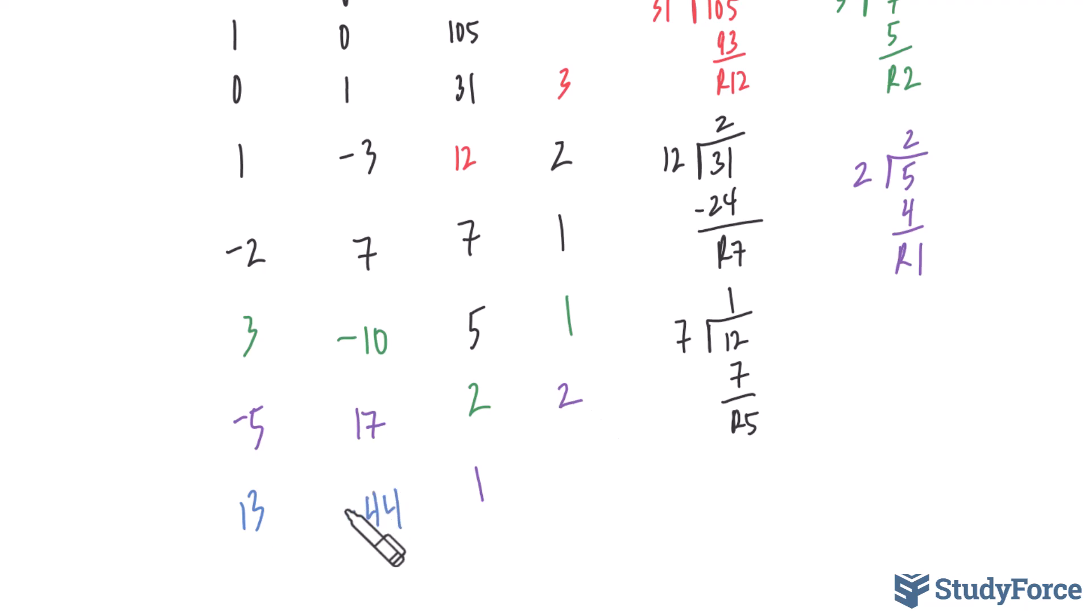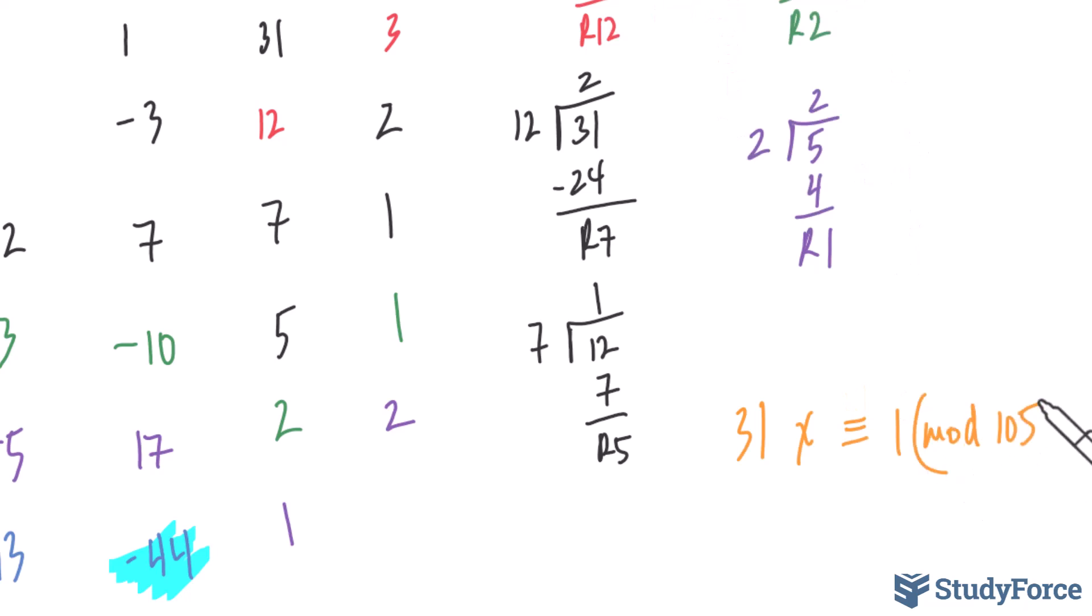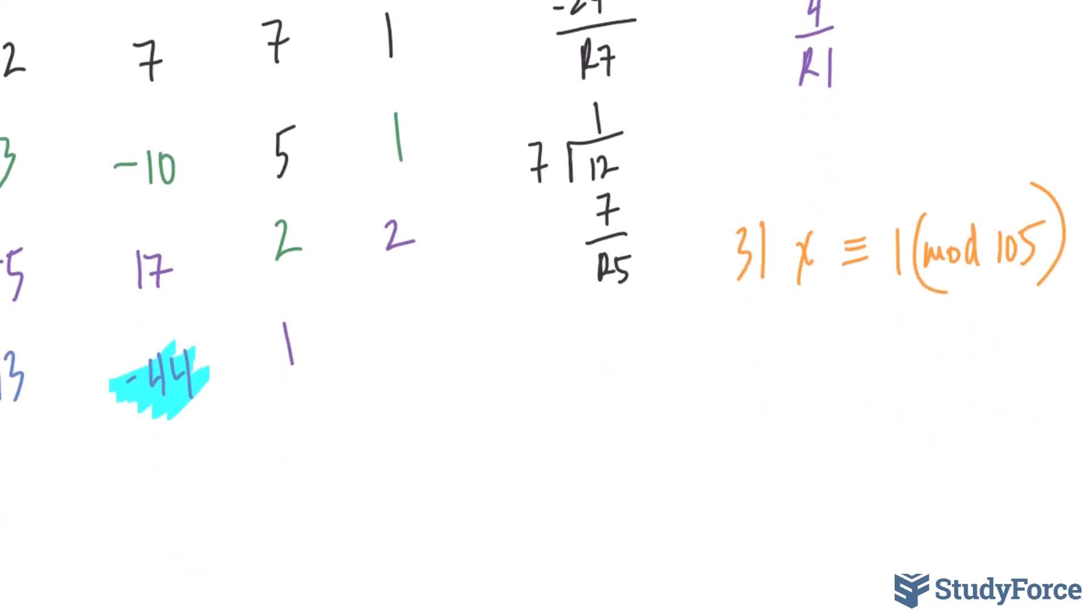This value right here is very important because what this number tells us is that the value for x or the value that satisfies the following congruence has been found. In other words, 31 times negative 44 makes this congruence true. But typically, we don't want to write values of x that are negative.